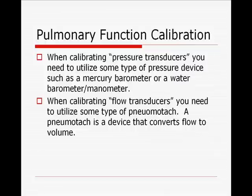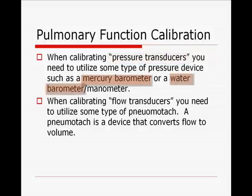When calibrating pulmonary function devices, pressure transducers are what you need when calibrating a pressure device — examples being a mercury barometer or a water barometer, which you would use to calibrate the pressure part of a body box. When calibrating the flow part, you need a flow transducer such as a pneumotach. A pneumotach is a device that converts flow to volume.